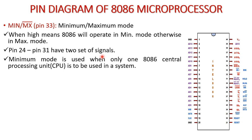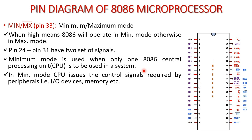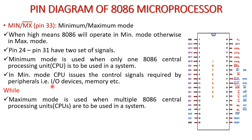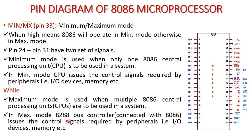Minimum mode is generally used when only one 8086 CPU is to be used in a system. When MN/MX bar signal is high, the 8086 operates in minimum mode; otherwise it works in maximum mode. In minimum mode, the CPU itself issues the control signals required by peripherals — that is input/output devices and memory. In maximum mode, when multiple devices are connected, the 8288 bus controller issues the control signals required by the peripherals.